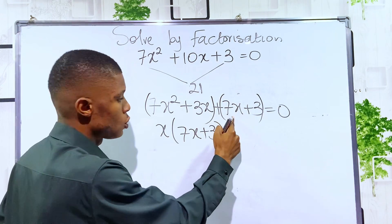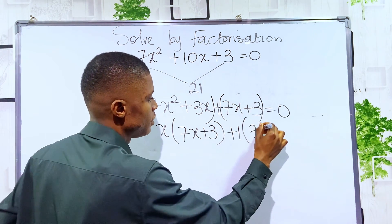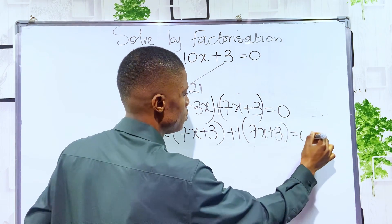Here we can factor out 1. Plus 1, we are left with 7x plus 3 equals 0.